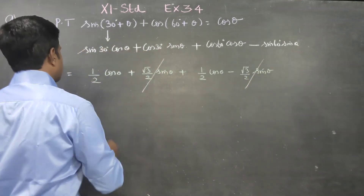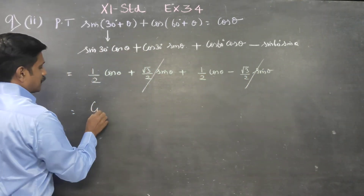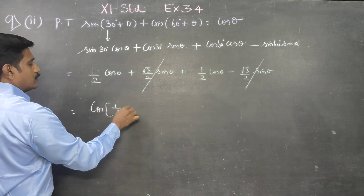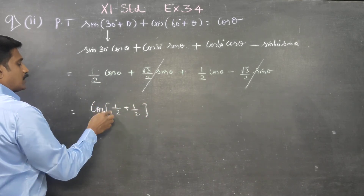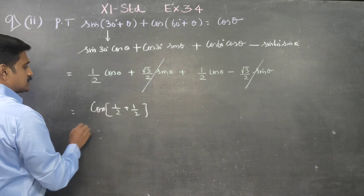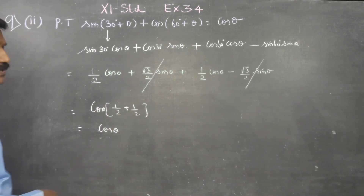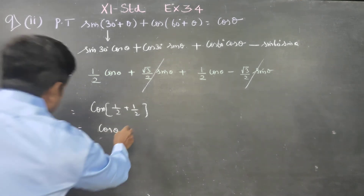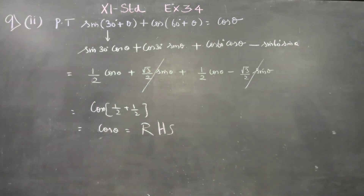Plus root 3 by 2 sin theta — cancelable. cos theta cos theta common, that means 1 by 2 plus 1 by 2, 1 into cos theta. The answer is cos theta. Therefore my answer is cos theta, this is my RHS — right hand side. Okay, thank you.